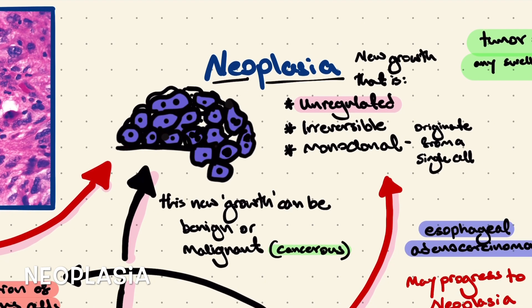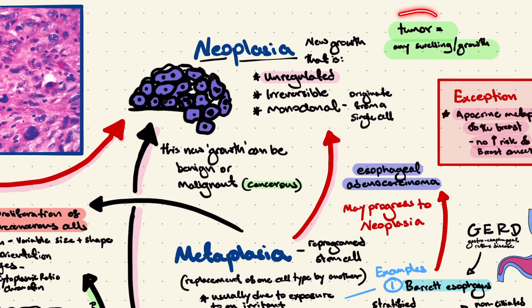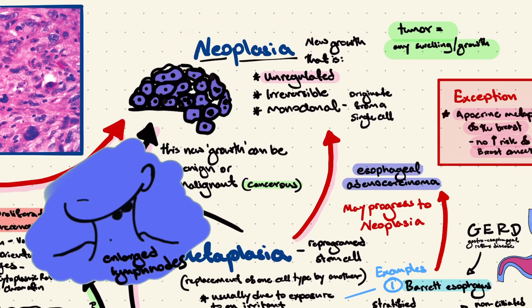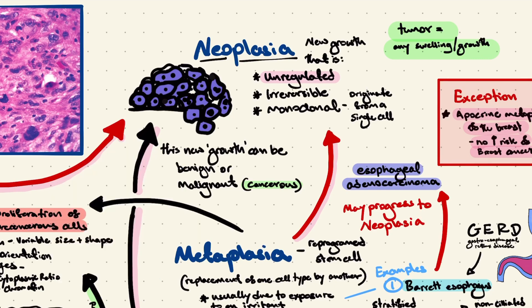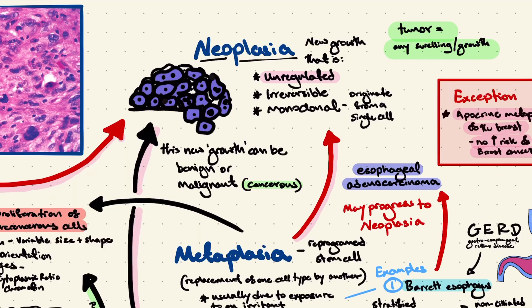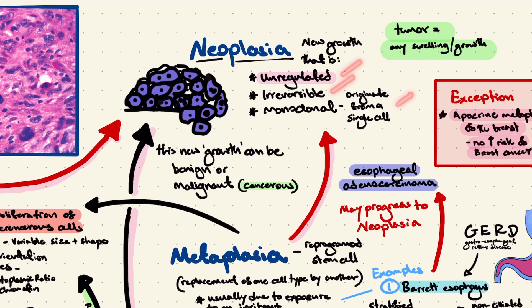In this video I've used the terms neoplasia and cancer interchangeably, but there is a distinction. Tumor refers to any swelling or growth — it could be abnormal as in neoplasia, or normal, for example enlarged lymph nodes due to infection. Neoplasia literally means new growth, and this new growth is unregulated, irreversible, and monoclonal. Remember, hyperplasia and hypertrophy are also growths, but they're not neoplasia because they're regulated. Neoplasia is unregulated and does not depend on any stimulus or stress — this is what makes it irreversible.